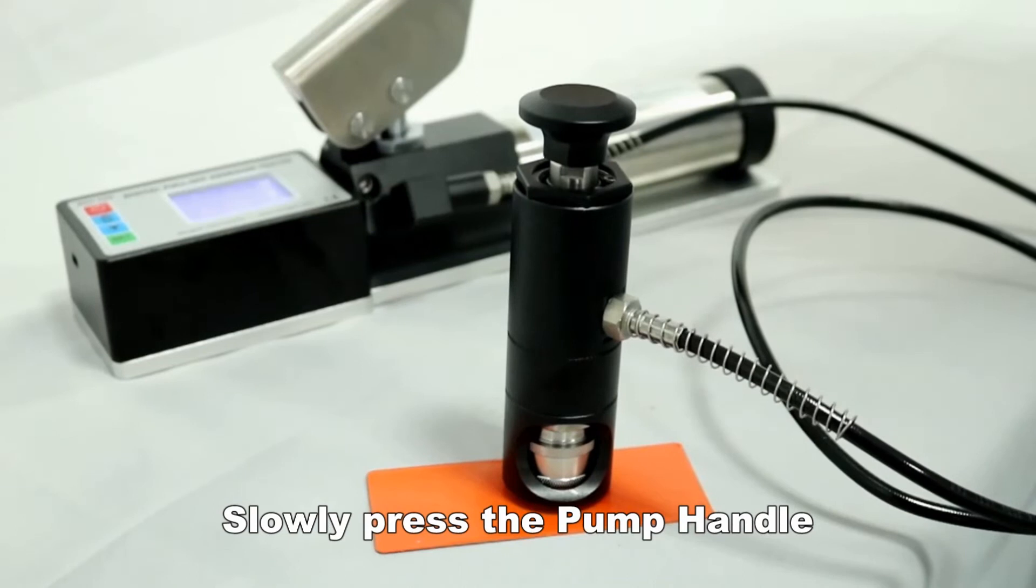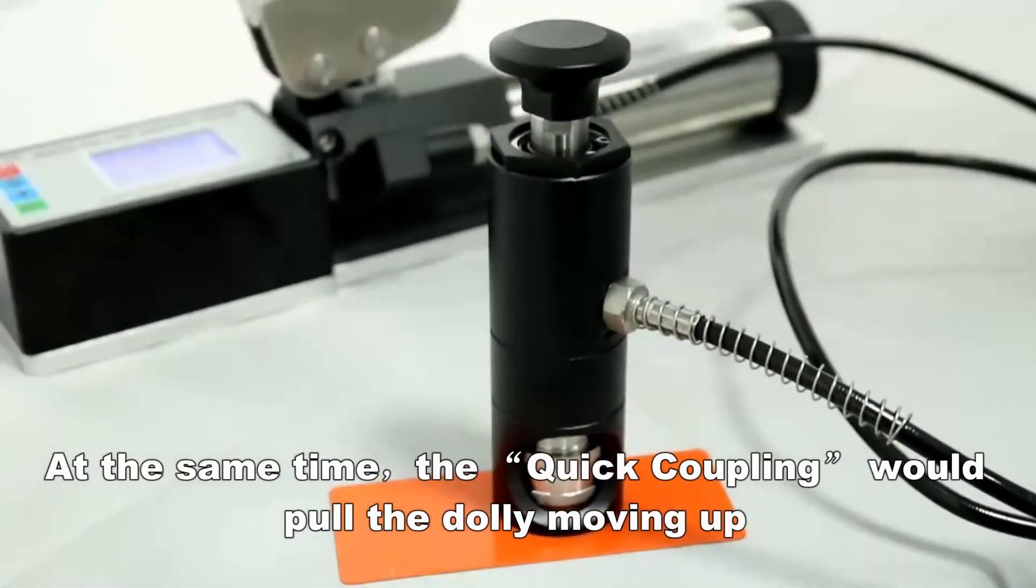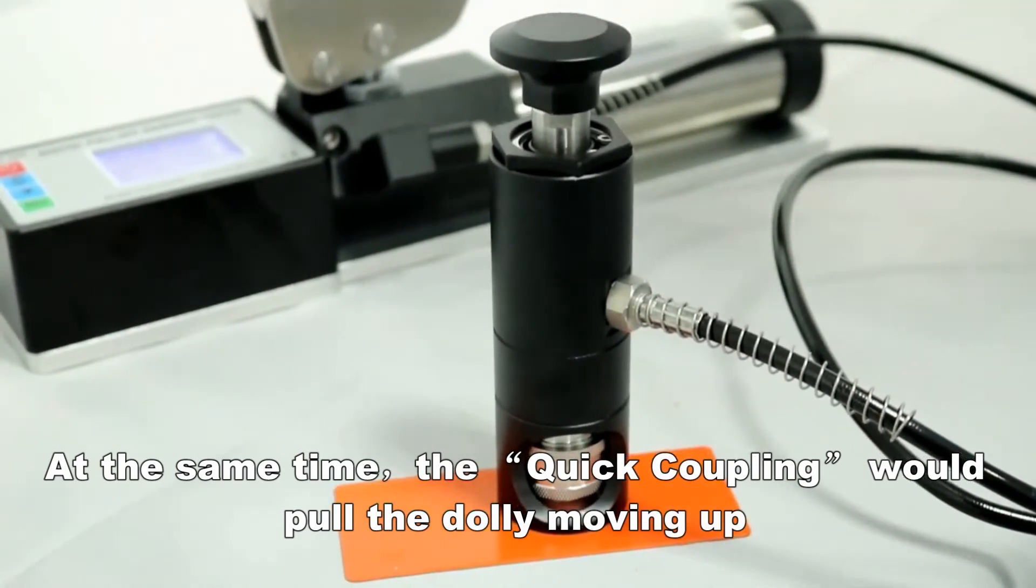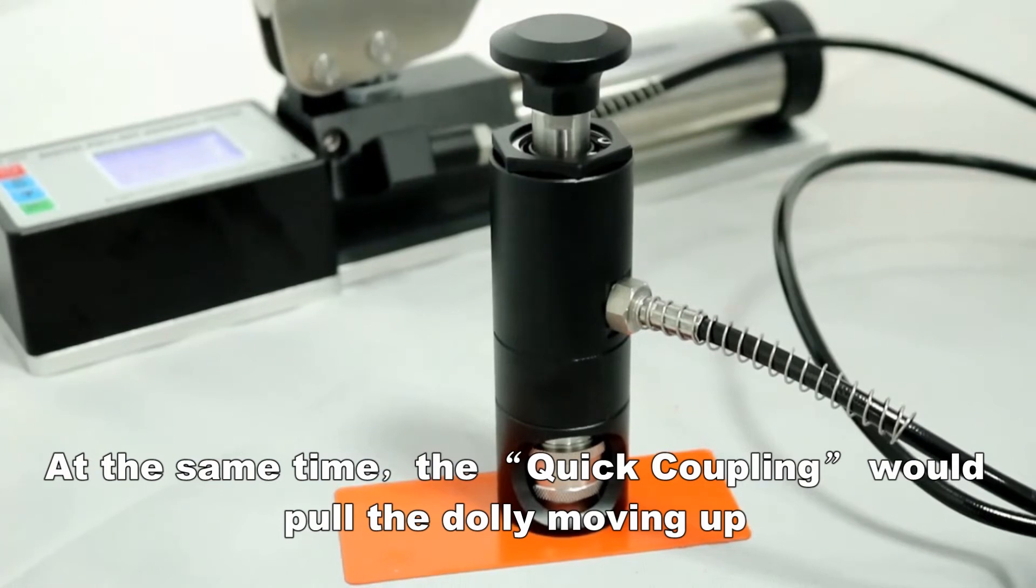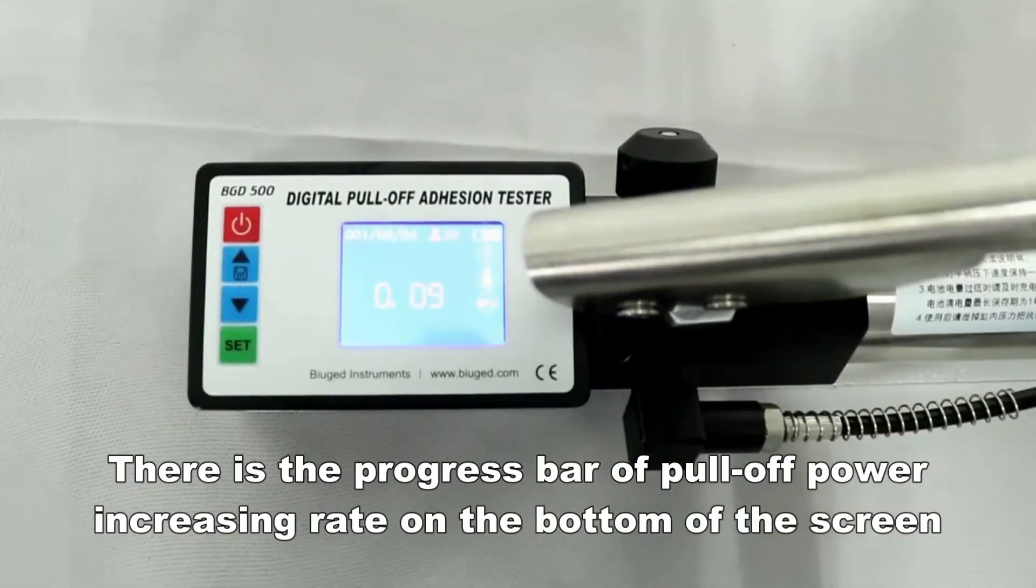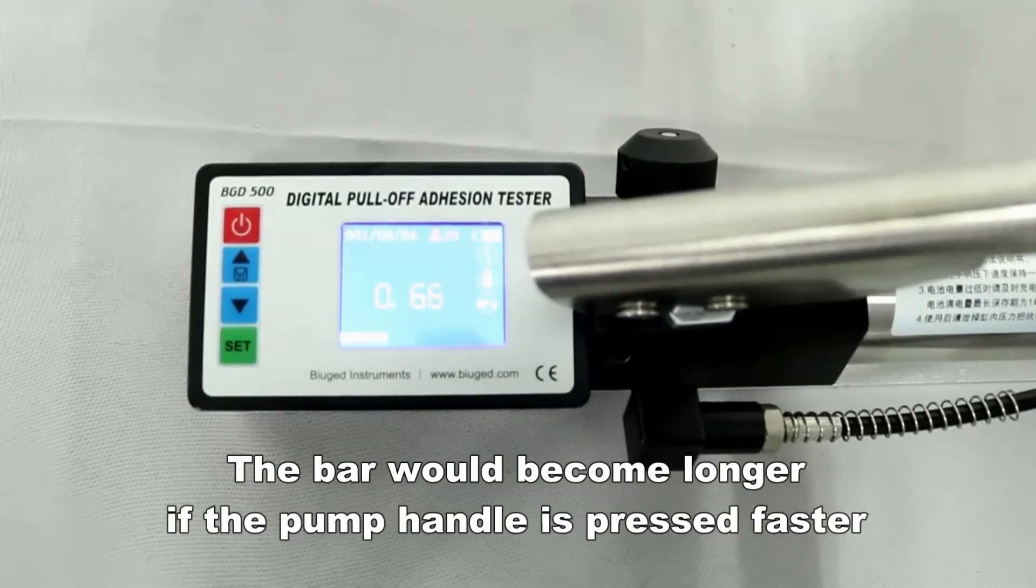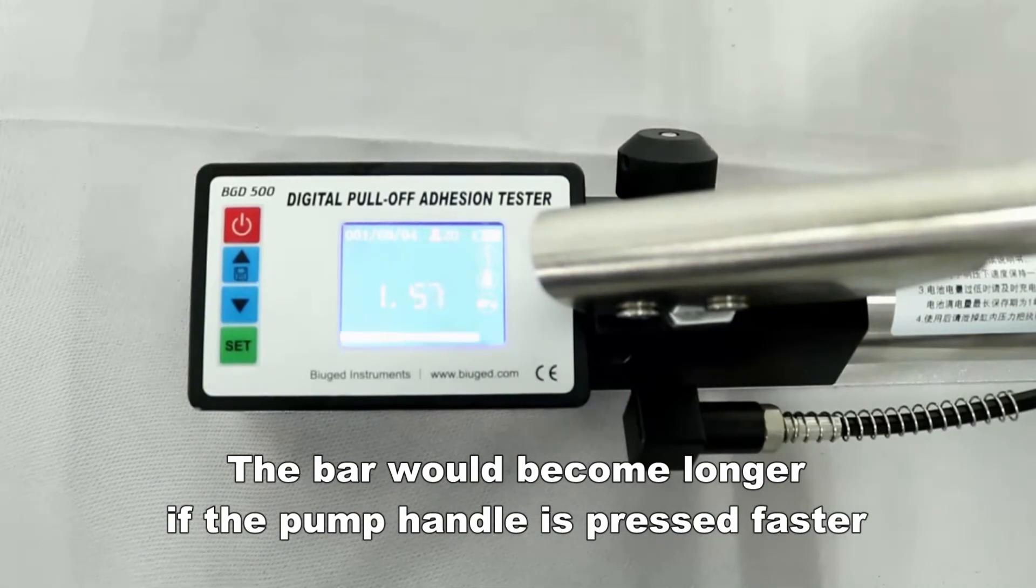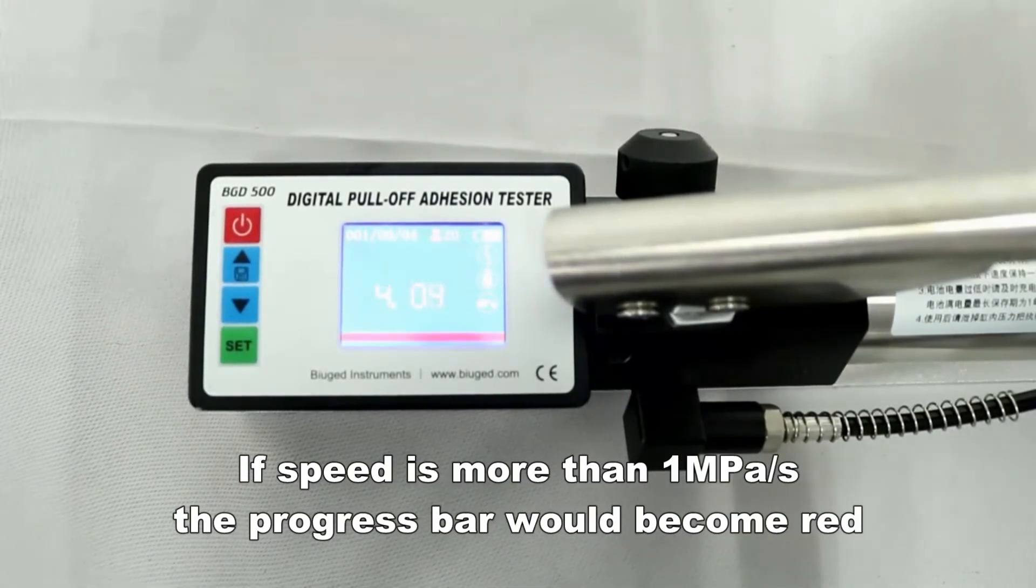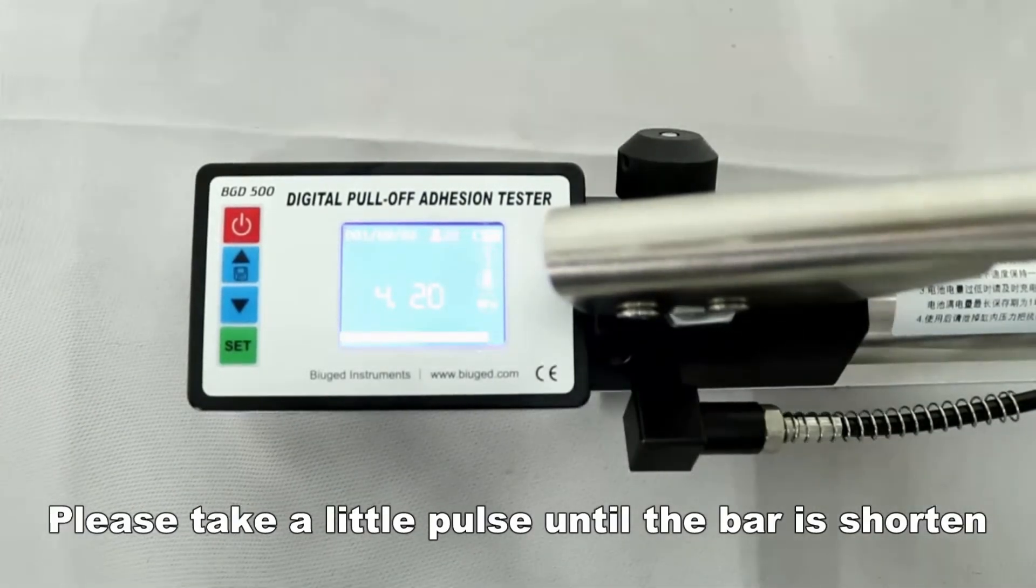Slowly press the pump handle. At the same time, the quick coupling would pull the dolly moving up. There is a progress bar of pull-off power increasing rate on the bottom of the screen. The bar would become longer if the pump handle is pressed faster. If speed is more than 1 MPa per second, the progress bar would become red. Please take a little pause until the bar is shortened.